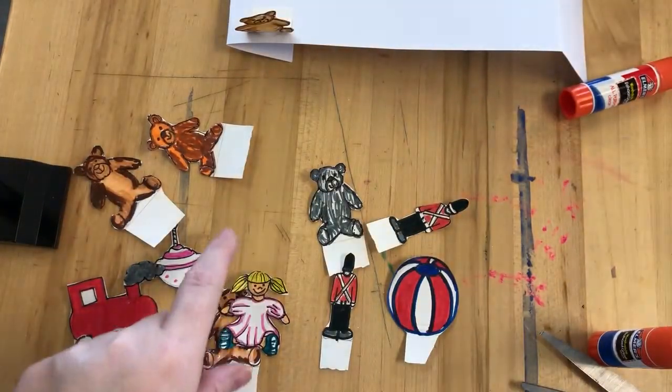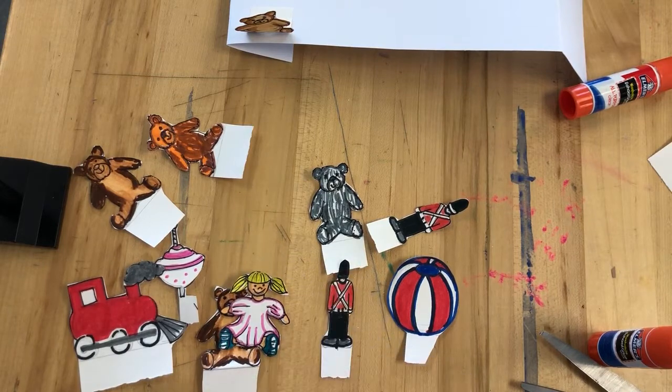The next part is to cut them out which is quite tricky because they're small and a little bit fiddly.